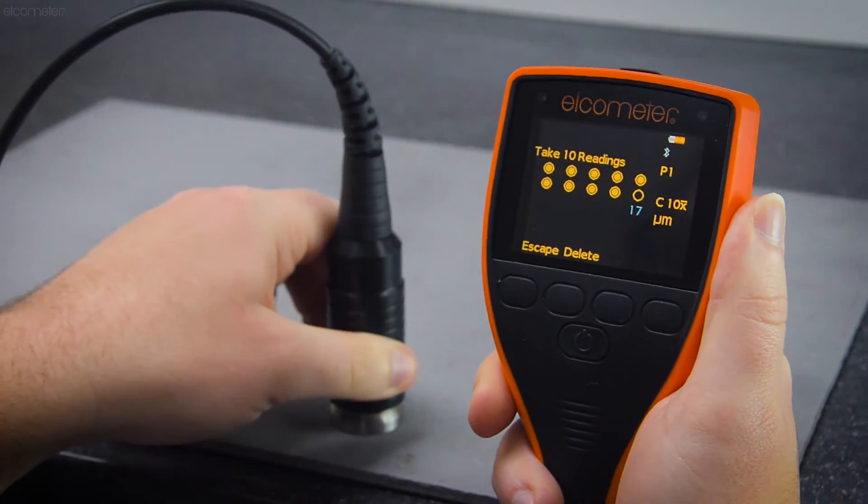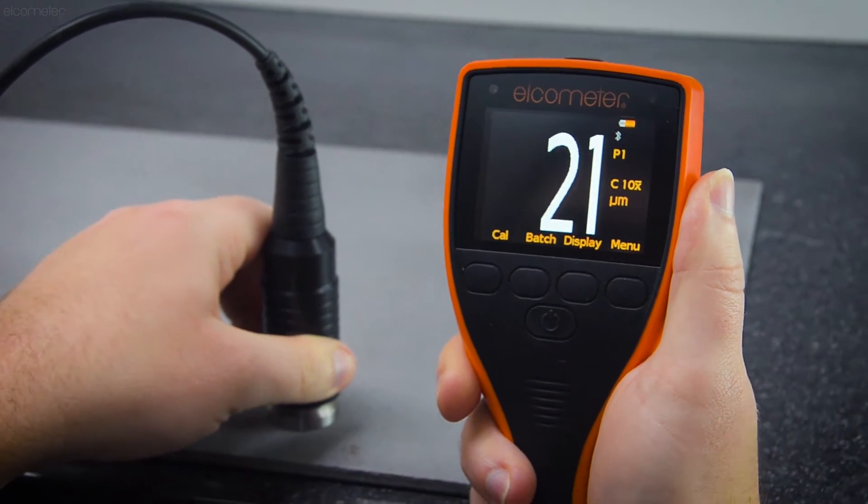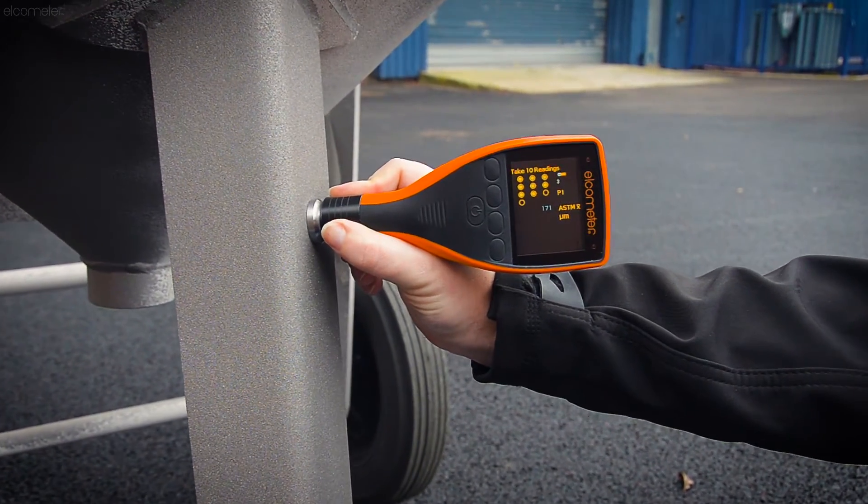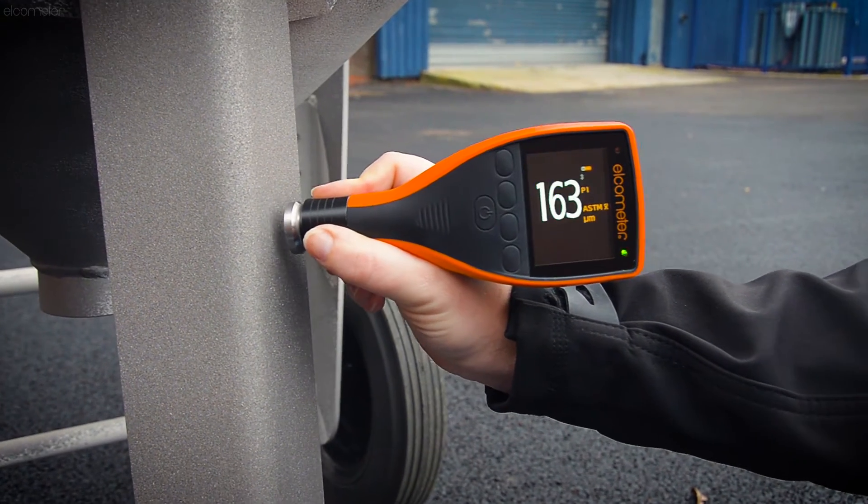A faster, more accurate, and repeatable method for measuring surface profile is the new Elcometer 224 digital surface profile gauge. The Elcometer 224 is a needle depth gauge which is very easy to use.